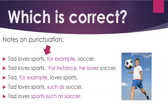Tad, for example, loves sports — in this case, Tad is being used as the example and we're separating the subject from the verb, interrupting the sentence with the phrase 'for example.' In this case you need a comma before and after the phrase. With 'such as,' you may have a comma before but not after the phrase: 'Tad loves sports, such as soccer.'